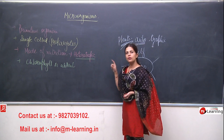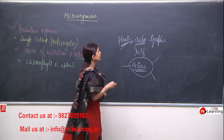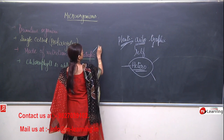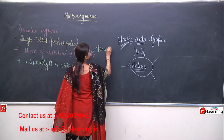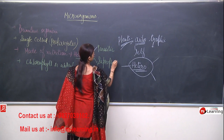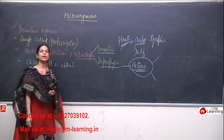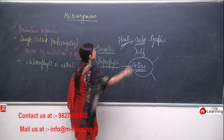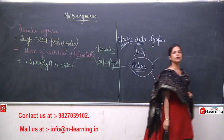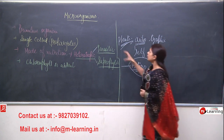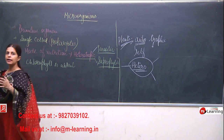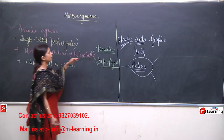In heterotrophic nutrition, which mode do bacteria have? They can be parasitic or saprophytic. Parasitic mode of nutrition means the organism takes its food from another organism. Those which take their food from other organisms are known as parasites.